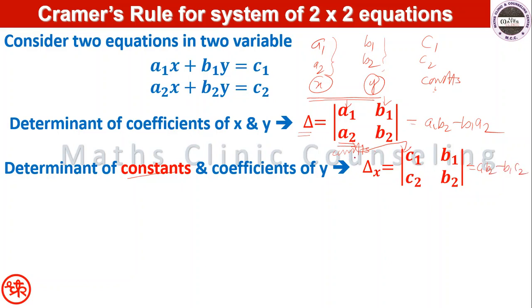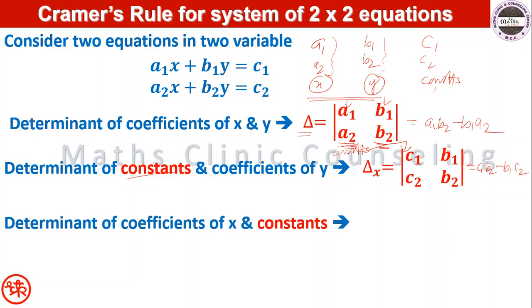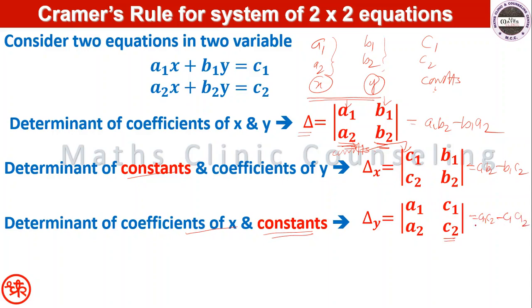Similarly, replacing the coefficients of y by the constants gives delta_y — the determinant of coefficients of x and constants. So delta_y equals the determinant with first column [a1, a2] and second column [c1, c2], which evaluates to a1·c2 minus c1·a2.